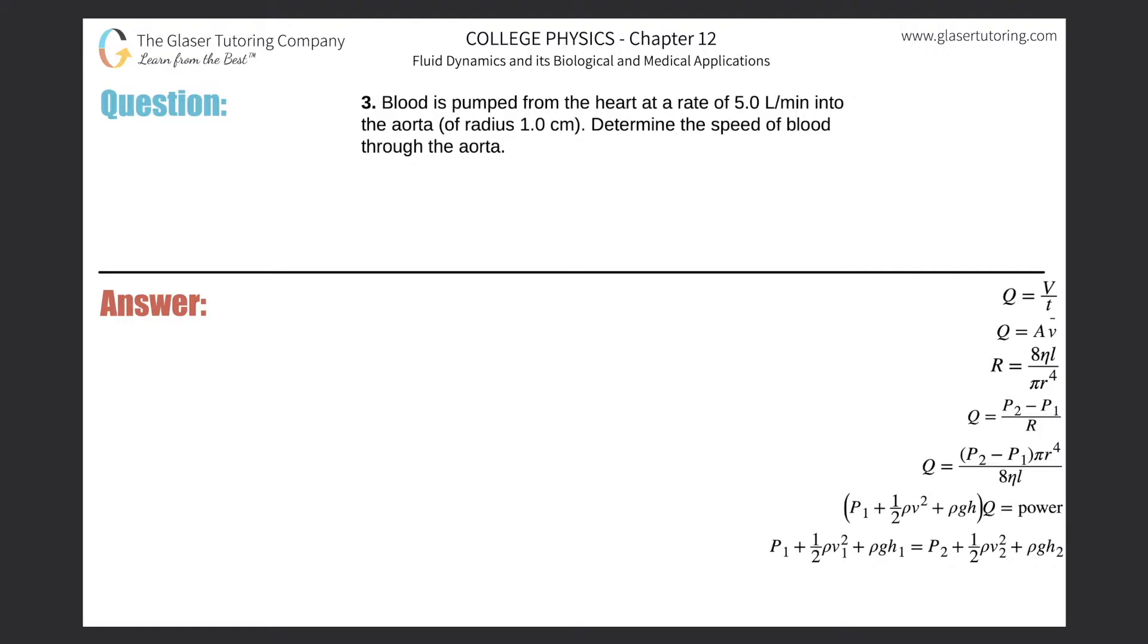Number three: Blood is pumped from the heart at a rate of 5 liters per minute into the aorta of radius 1 centimeter. Determine the speed of blood through the aorta. The variable for speed is velocity.